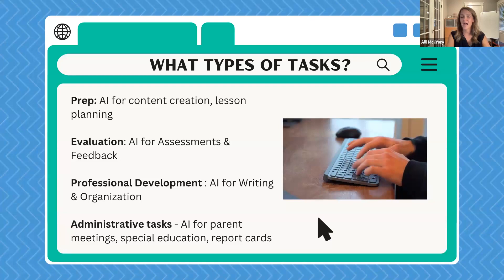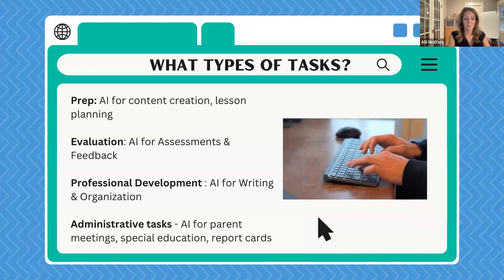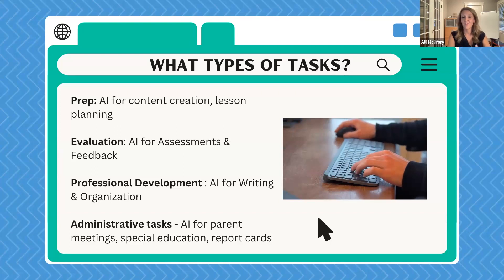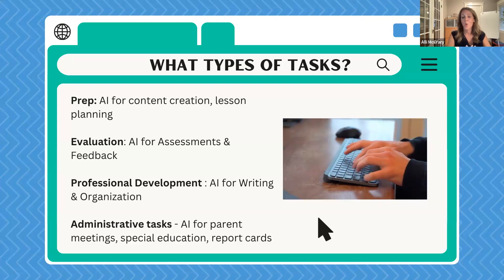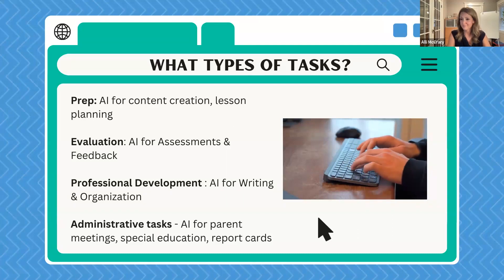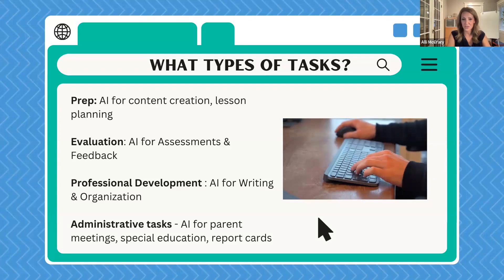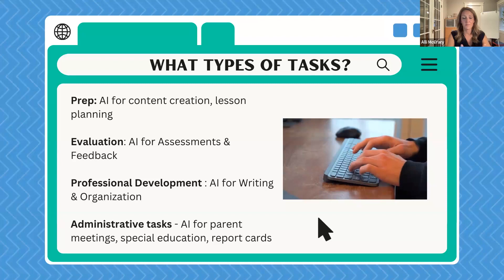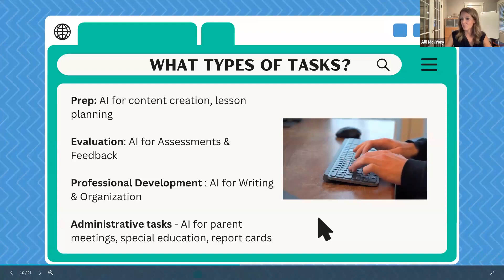So what types of tasks can AI help us with as educators? As I mentioned, it can help with prep — AI can do unit creation, lesson creation, content creation. For evaluation and feedback, we have AI tools now where you can get immediate feedback on a piece of writing or on something you're trying to develop for your curriculum. We have AI for writing, for organization, for administrative tasks. Think about how long it takes to create a newsletter, a sub plan, or a report for a special education meeting. There are literally tools to do all of these administrative tasks associated with our work.